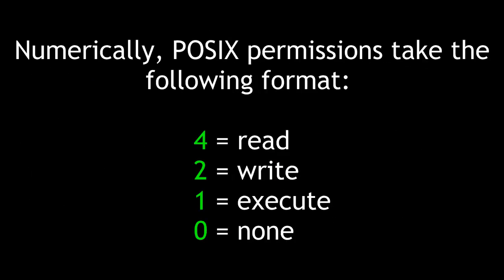Numerically, POSIX permissions take the following format: 4 is read, 2 is write, 1 is execute, and 0 is none. By combining and adding these numbers together, you can create combinations of read, write, and execute with the chmod command.